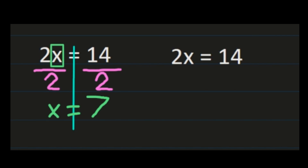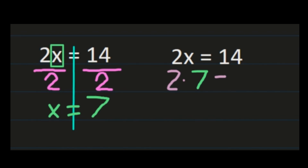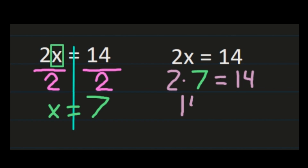Just like with addition and subtraction, we can check our answer. We have 2 times x equals 14, and we found x equals 7, so we plug in 7 for x. We need to prove that 2 times 7 really equals 14. Well, 2 times 7 is 14, so we get 14 equals 14 — a true statement. As long as you get 14 equals 14, you've proven that x equals 7 and your work is correct.